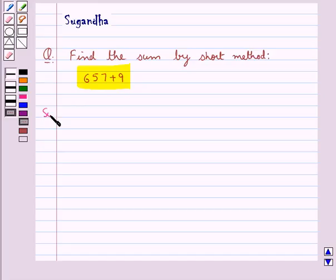Let's see the solution now. We need to find the sum of 657 and 9 by short method.